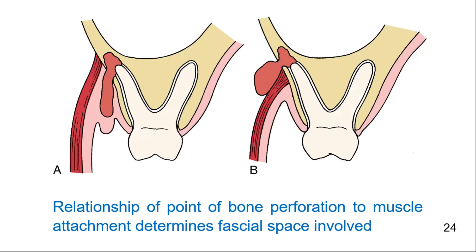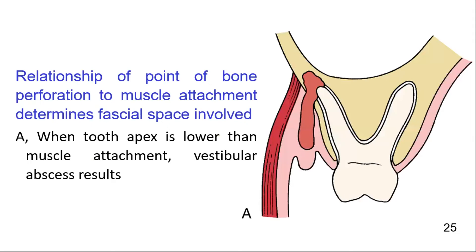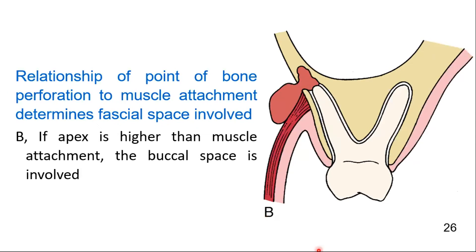The maxillary molars are most commonly associated with buccal space infection. Infections arising from buccal root apices of molars that perforate the alveolar bone immediately inferior to the attachment of the buccinator muscle on the alveolar process lead to vestibular infection. Where the infection arises from the buccal root apices of the molar and perforates the alveolar bone immediately superior to the attachment of the buccinator muscle on the alveolar process, the buccal space is involved.